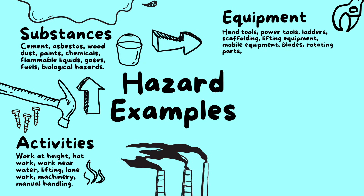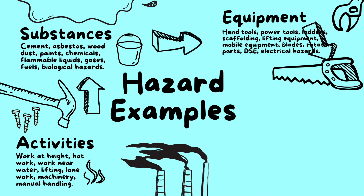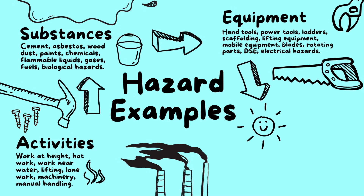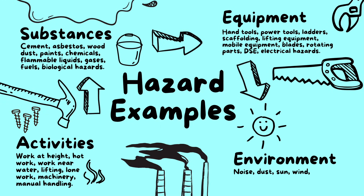Equipment hazards include hand tools, power tools, ladders, scaffolding, lifting equipment, mobile equipment, blades, rotating parts, DSE, and electrical hazards.